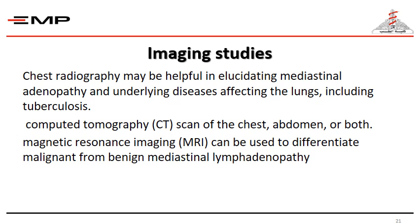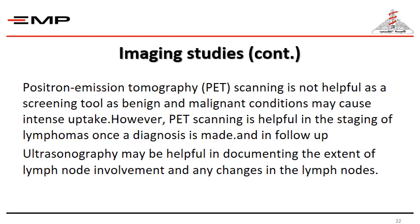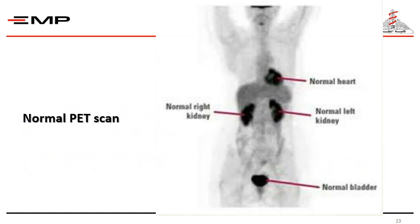As regards imaging studies, chest X-ray may be helpful in elucidating mediastinal adenopathy and underlying lung disease, including TB. CT of the chest, abdomen, or both is also valuable. MRI can be used to differentiate malignant from benign mediastinal lymphadenopathy. PET scan is not helpful as a screening tool, as both benign and malignant conditions may cause intense uptake; however, PET scan is helpful in the staging of lymphomas once a diagnosis is made, and also in follow-up. Ultrasonography may also help in documenting the extent of lymph node involvement.